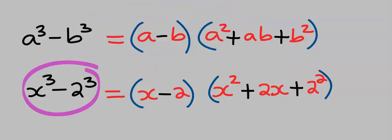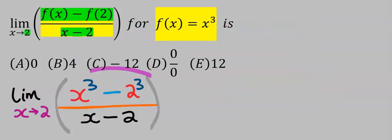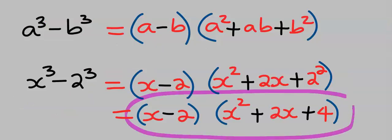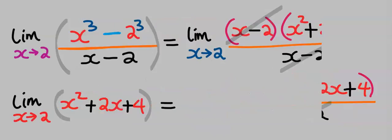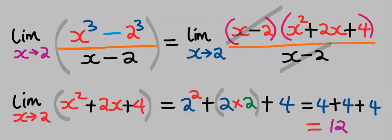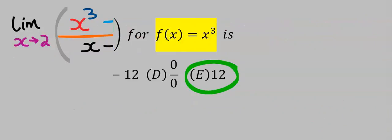With this concept, I can now modify the numerator to difference of cubes. Hence instead of this, I'm going to replace it with this. Next, this can now take away this. Next, take the limit of the remaining function. Substituting correctly, our answer is 12, which is A.